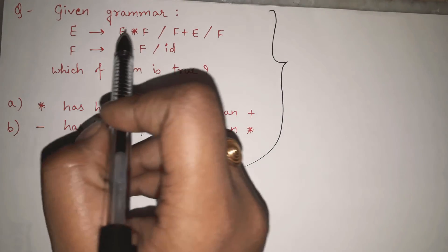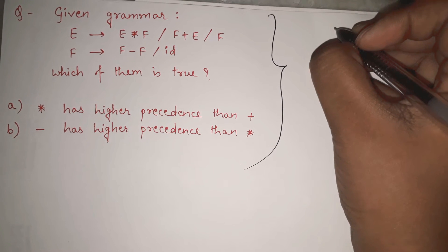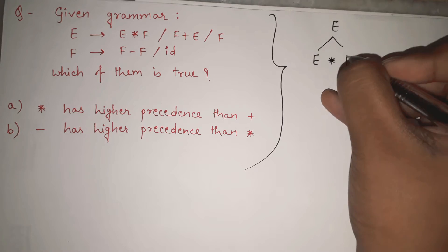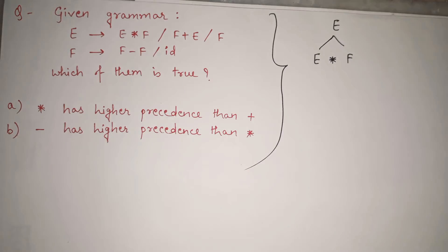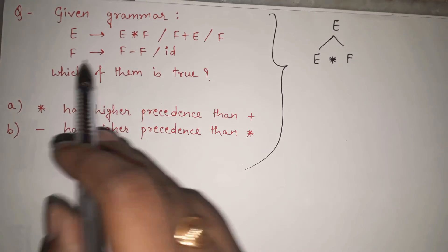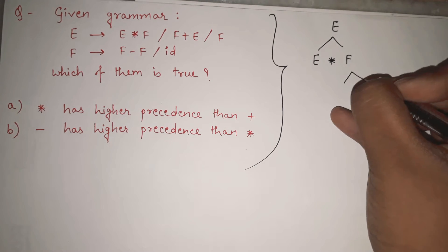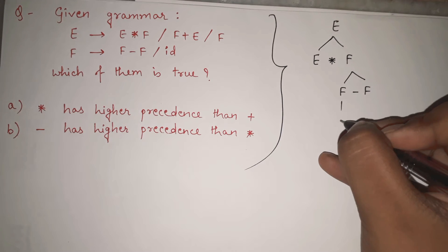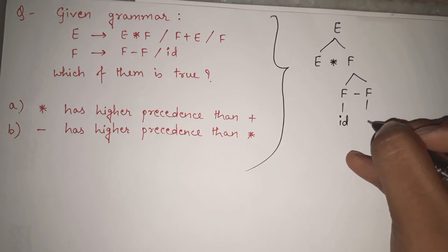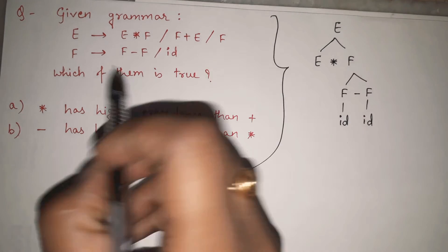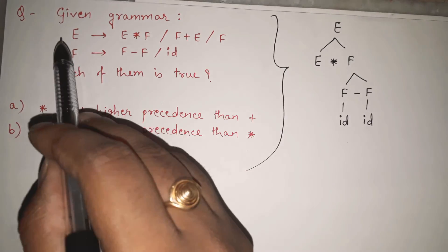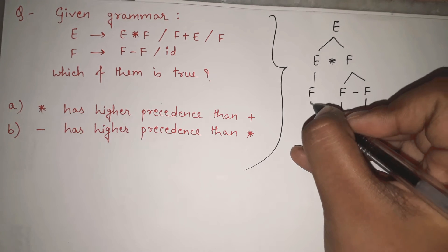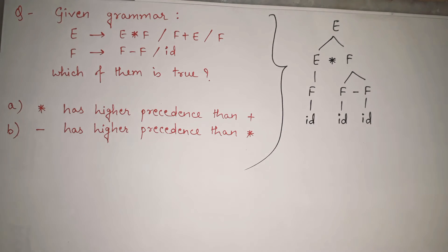So let's see how we will do it. Here the grammar is E gives E star F. Currently I am taking the first production. Now again F gives what? F minus F. F gives F minus F. Then F gives ID. F gives ID. F gives ID. Now E, does E directly gives ID? No, but E can give F and F gives ID. So E gives F. F gives ID.